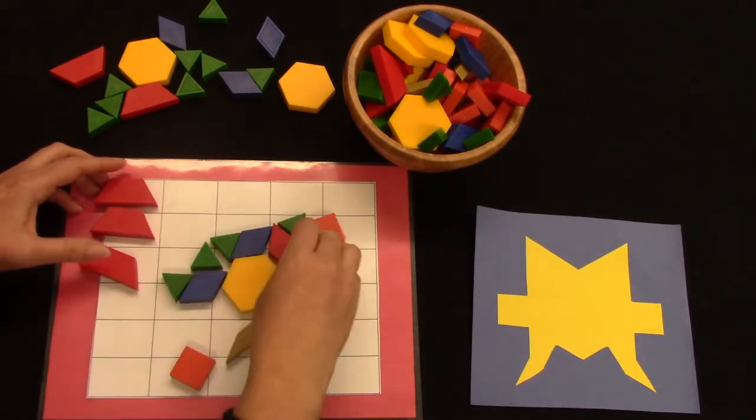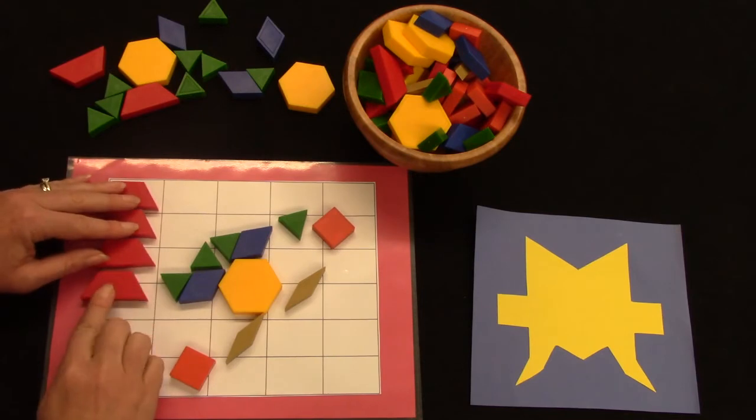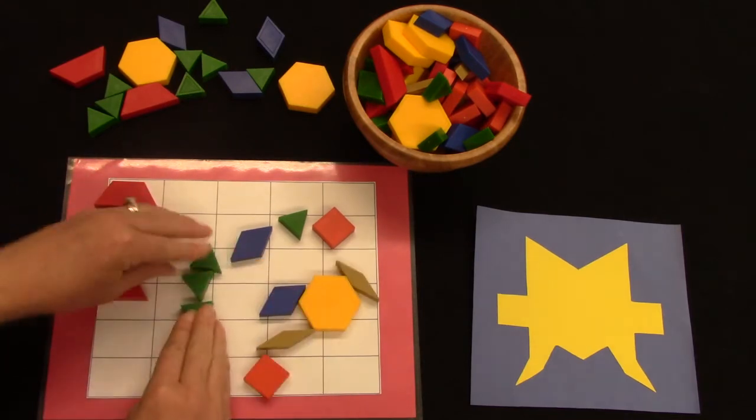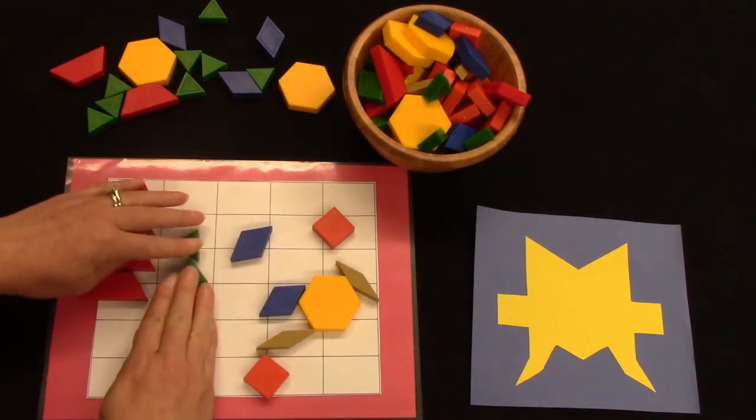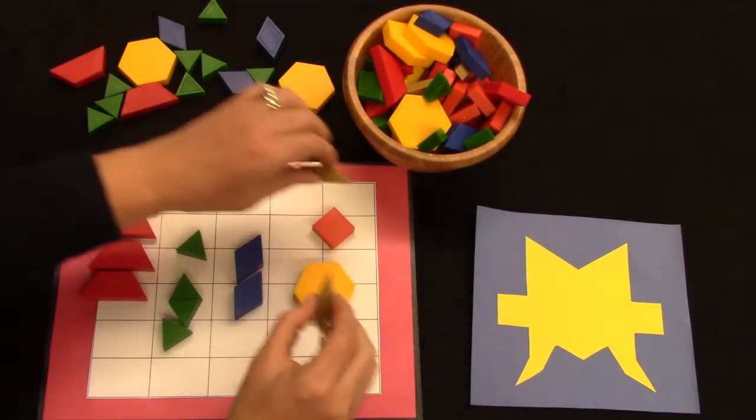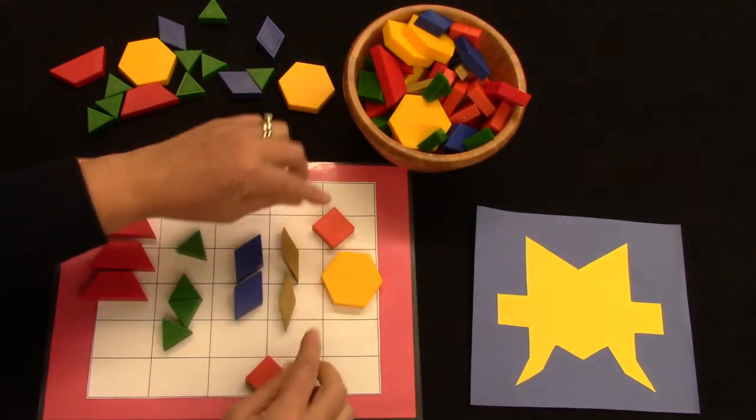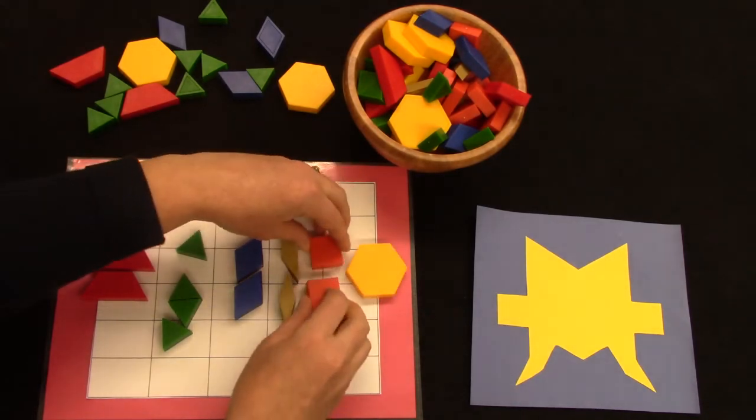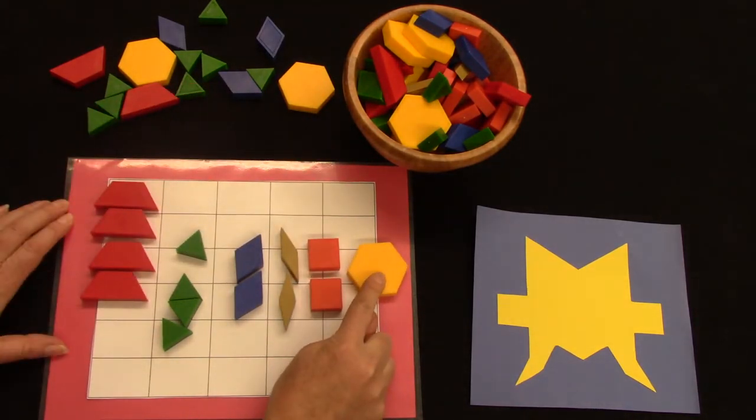I have one, two, three, four trapezoids and I have one, two, three, four triangles. I have two rhombus. Oh, here's two more rhombus. They're just a different kind. I have two squares and I have one hexagon.